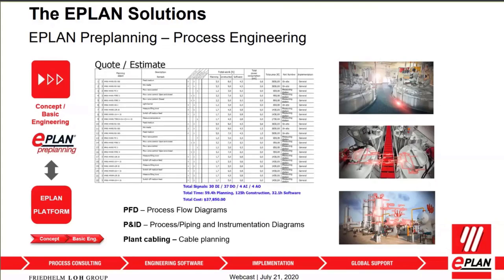Preplanning is also important for quotes and estimates. You need to understand how much a system will cost and how long it will take to build. Preplanning captures not only controls objects but all objects needed for quoting and planning, and summarizes all values. You can see a summary identifying the amount of inputs, outputs, and signals needed, plus the time needed for planning, construction, and software, as well as a total cost — all quickly captured early in the process for quoting purposes.